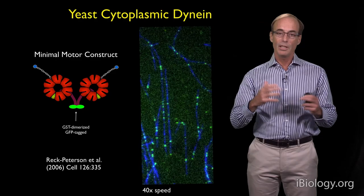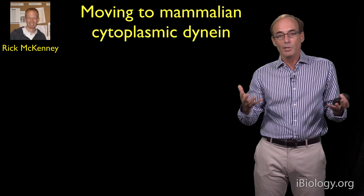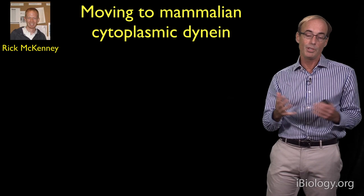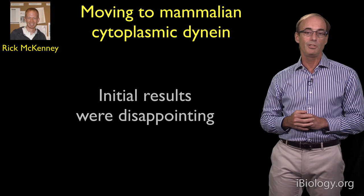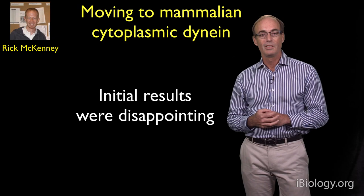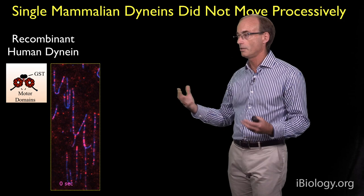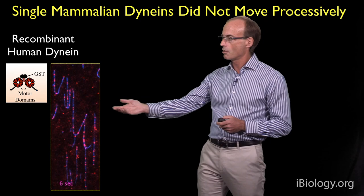Later we wanted to extend our work to mammalian dynein. This was work that Rick McKinney did, and we thought it was going to be fairly straightforward — we'd just do all the same things that we did with yeast and apply it to dynein from a different species. But unfortunately, the initial results were rather disappointing. We first tried to make recombinant human dynein, very much like the type of recombinant dynein that we made with yeast. The dyneins here are in red in this case, but we saw very little motility.